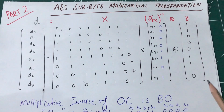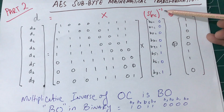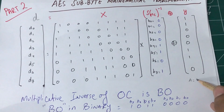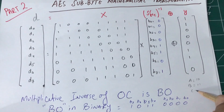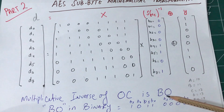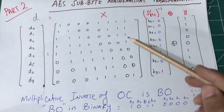In the previous video, we calculated using this definition. We took the state matrix value 0C and first found its multiplicative inverse, which turned out to be B0 in hexadecimal. As a reminder: A is 10, B is 11, C is 12, D is 13, E is 14, F is 15. We then transformed B0 into binary form: 1011 for B and 0000 for 0.